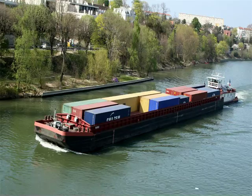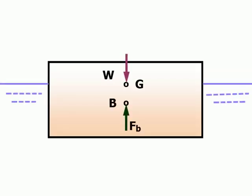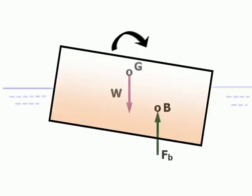A floating body such as a barge that rides low in the water can be stable even though the center of gravity lies above the center of buoyancy. This is true since as the body rotates the buoyant force, Fb, shifts to pass through the centroid of the newly formed displaced volume.